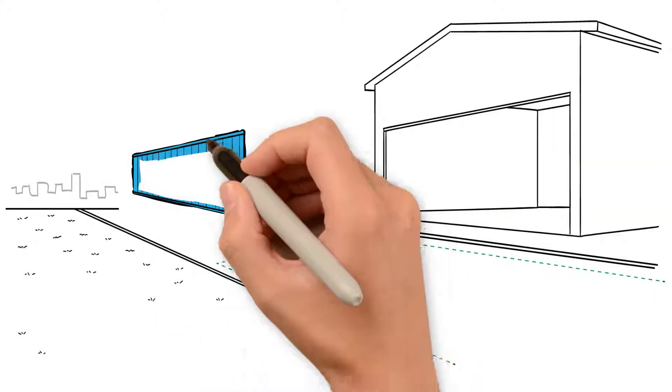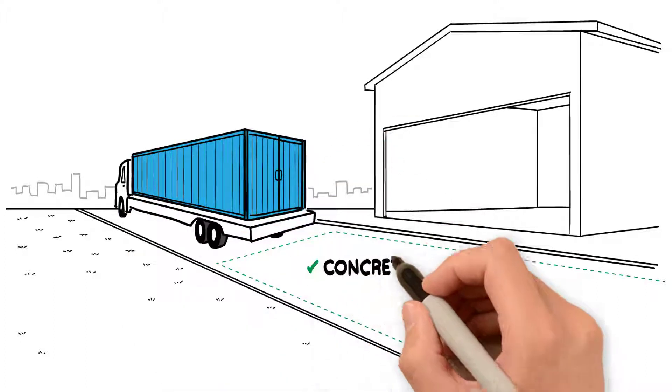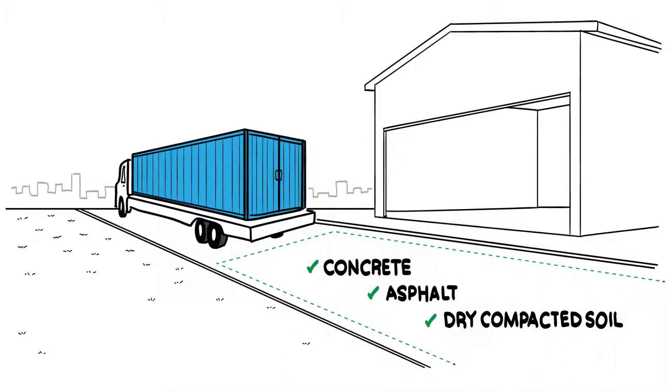Is the ground a hard and smooth surface? Always unload your shipping container onto concrete, asphalt, or dry, compacted soil, and never onto wet grass, wet, or unlevel surfaces.